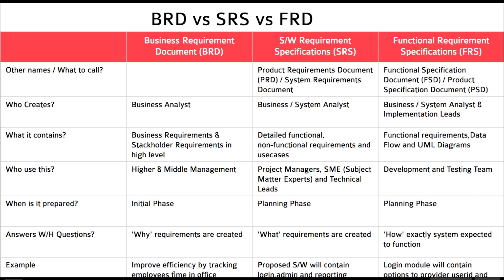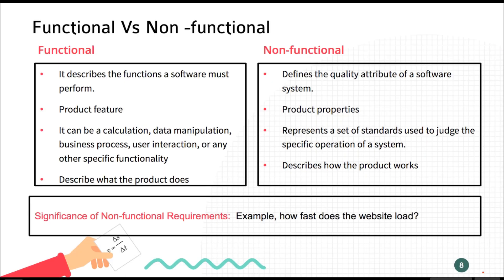The FSD explains how exactly the system should perform. For example: the business requirement is 'improve efficiency by tracking employees' time in the office.' The SRS would state 'the proposed software will contain a login page, admin page, and reporting page.' The FSD would then say 'the login module will contain options to provide a user ID and password.'